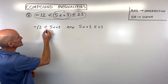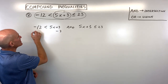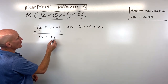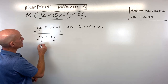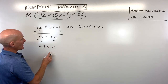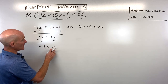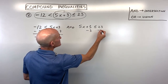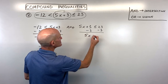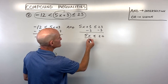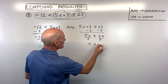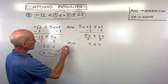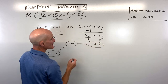Solving the first: subtract 3 from both sides, then divide by 5, giving negative 3 is less than x, or equivalently x is greater than negative 3. For the second: subtract 3 from both sides to get 5x is less than or equal to 20, then divide both sides by 5 to get x is less than or equal to 4. Since this is an 'and', our solution is x is greater than negative 3 and x is less than or equal to 4.